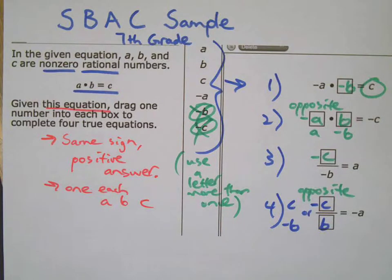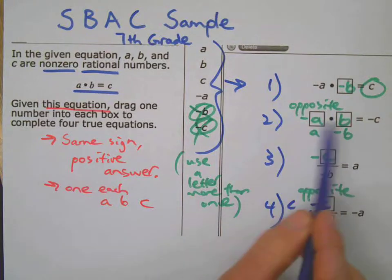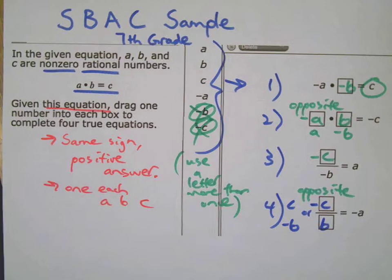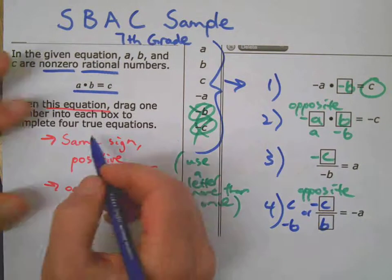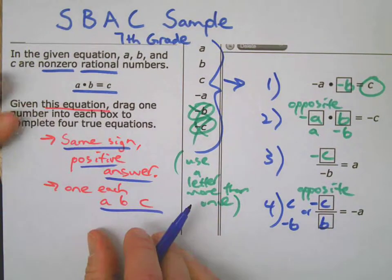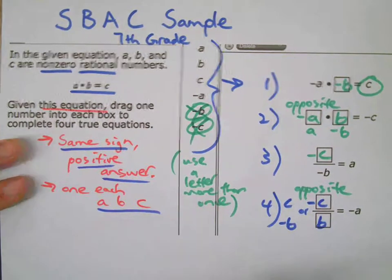So simple problem. It could look very confusing, which is what I think they're hoping for here. There's one, two, three, four, five, six answers that you have to complete. But the bottom line is, if you remember the same sign, positive answer, make sure you have an A, a B, and a C in each thing.